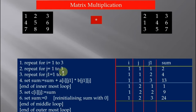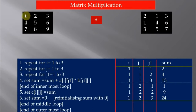Repeat for j equal to 1, 2, 3 — this is used for traversing the columns of the second matrix. Repeat for j1 equal to 1, 2, 3 — this innermost loop will be executed most frequently because it traverses the columns of the first matrix and rows of the second matrix.